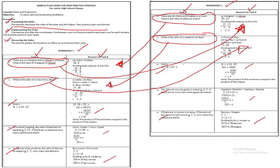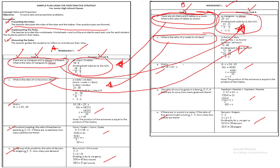This is the format: you give Worksheet A to Student A and Worksheet B to Student B. Student A answers the questions on their worksheet, and Student B answers their own. After answering, Student A checks Student B's work using the answer key on their worksheet, and Student B checks Student A's work the same way. They then discuss the solutions with their peer. That is the peer practice strategy.